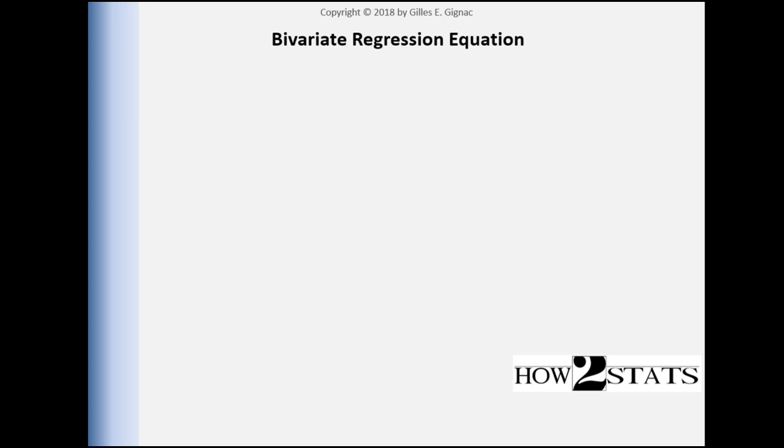In this video, I'm going to identify and describe the key elements of the bivariate regression equation. The main reason we should have knowledge of the bivariate regression equation is that it helps us make predictions. So if you want to predict something, you can potentially use bivariate regression to make that prediction.